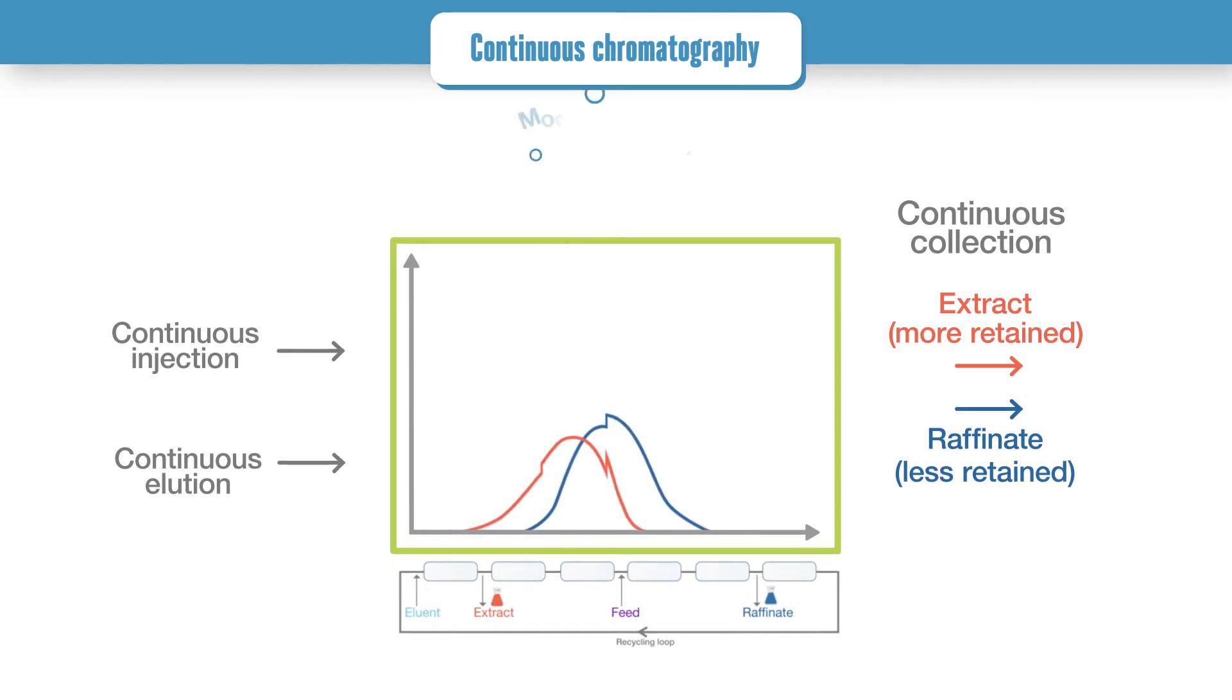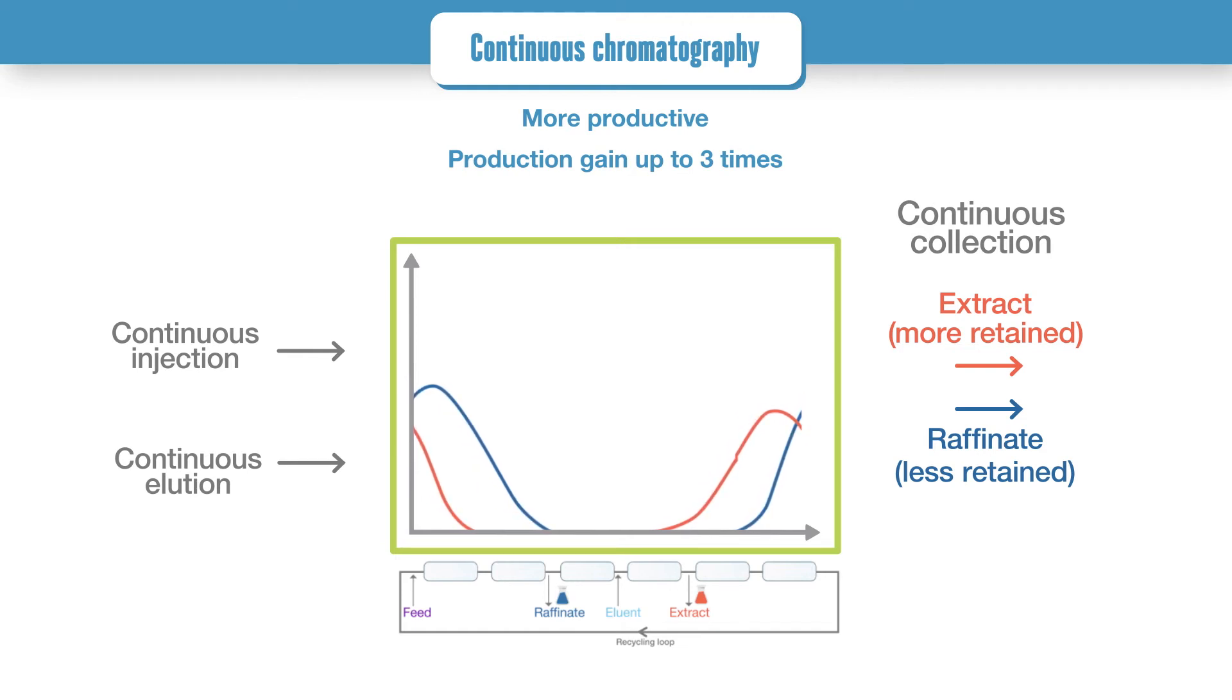Continuous chromatography is more productive, optimizing the use of the stationary phase. Typically, the production gain can be up to three times compared to an equivalent batch process, and the consumption of eluent is proportionally lower. However, the implementation of a continuous process requires more development and characterization work. It is suitable for medium- to large-scale chiral separations, such as the separation of isomers from a racemic mixture.